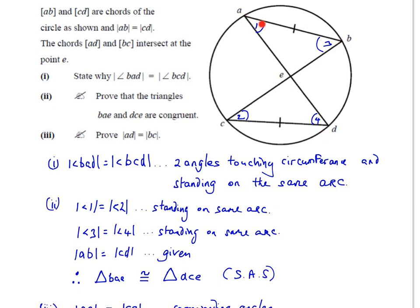The question asks us to state why angle BAD equals angle BCD. Angle BAD is this angle — label it 1. Angle BCD is this angle — label it 2. To prove they are equal you need to know your theorems. A corollary states that two angles touching the circumference and standing on the same arc are equal. Both of these angles stand on arc BD, so they must always be equal.